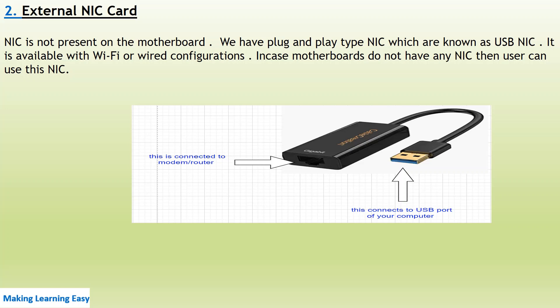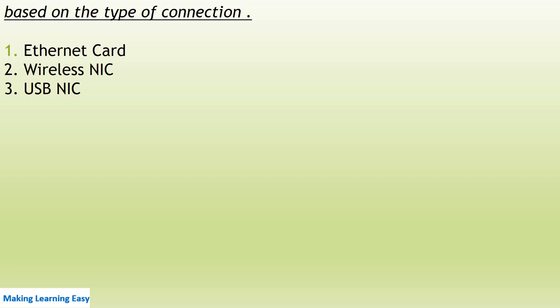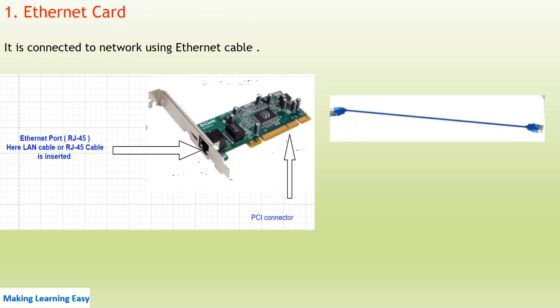Based on the type of connection, we can divide NICs into three parts: ethernet card, wireless card, and USB card. In an ethernet card, you have an ethernet port, and into that ethernet port the ethernet cable is connected. One end of the ethernet cable is connected to the ethernet port of your device.